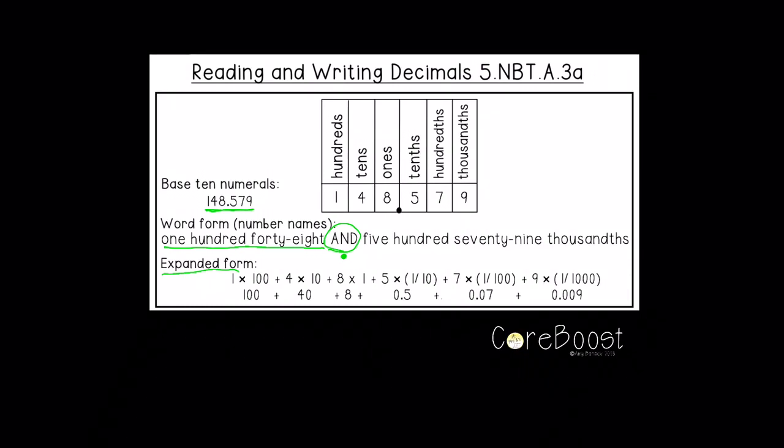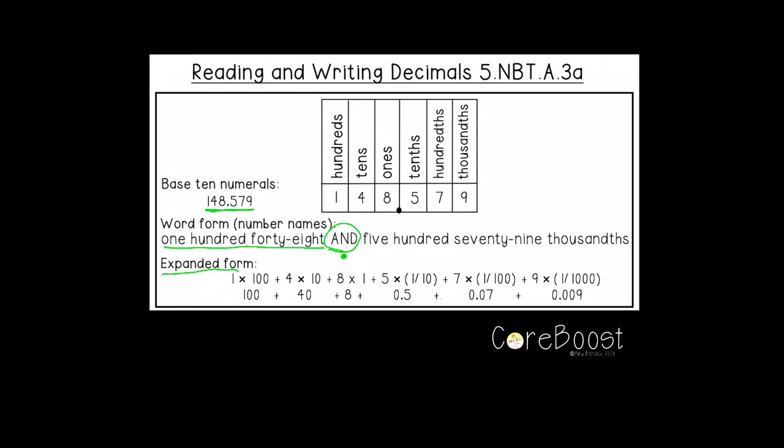And then we have expanded form. So you're probably familiar with expanded form of whole numbers. We would have 1 times 100 for 100, 4 times 10 for 40, 8 times 1 for 8.